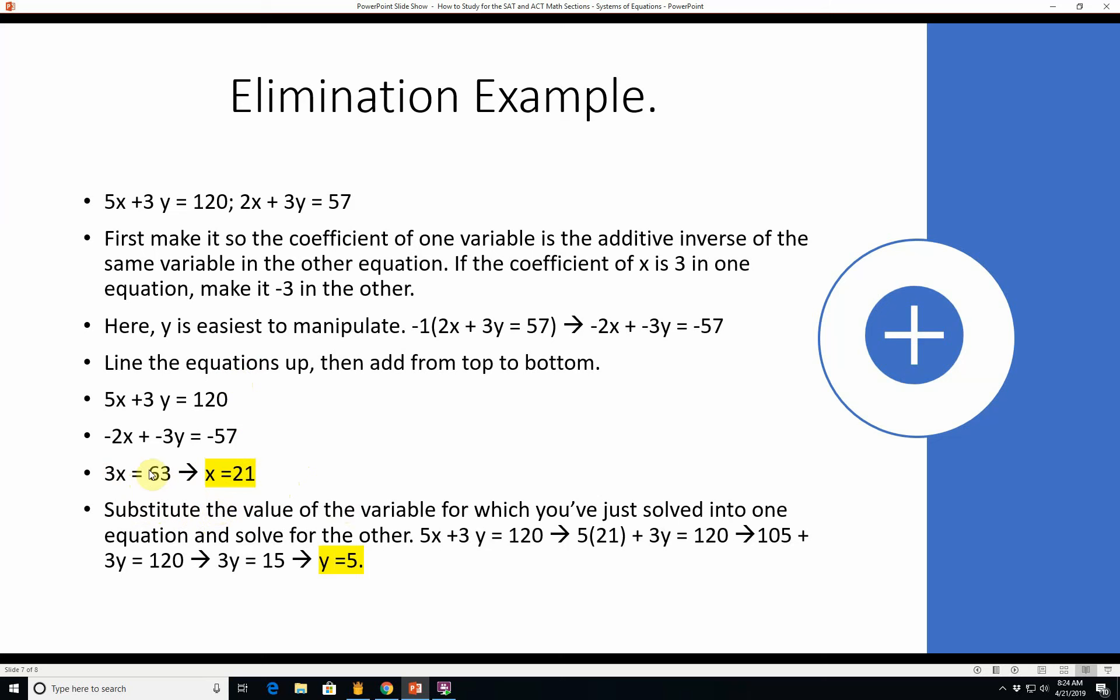You're going to substitute the value of the variable for which you've just solved. Put 21 in for x into one equation and solve for the other. 5x plus 3y equals 120. 5 times 21 is 105 plus 3y equals 120. That means 3y is 15 so y equals 5. You could also do it in the other equation. 2 times 21 is 42 plus 3y equals 57. 3y equals 15 so again y equals 5. It's a good idea to check these things in both equations just to make sure that you didn't make any mistakes.